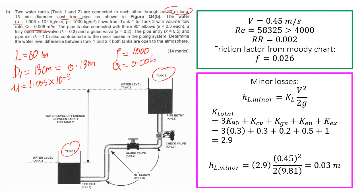The pipe is also connected with three 90-degree elbows, each with a loss coefficient K of 0.3. There is a full-open check valve with a coefficient of 0.3, and a globe valve with a coefficient of 0.2. The pipe entry has a coefficient of 0.5 and the pipe exit has a coefficient of 1. All of these contribute to the minor losses in the piping system. We want to determine the water level difference H between tank 1 and tank 2.